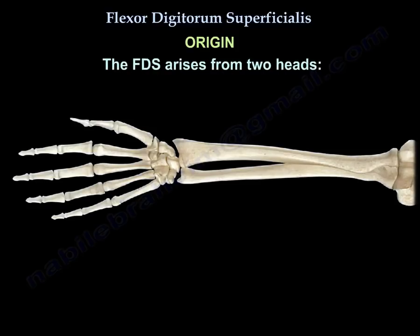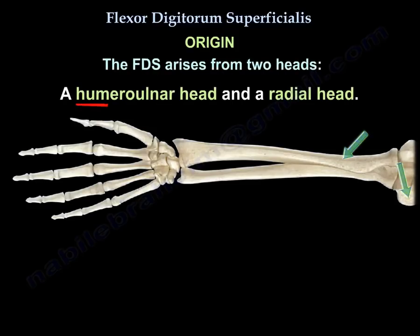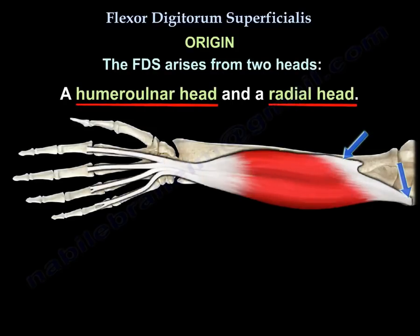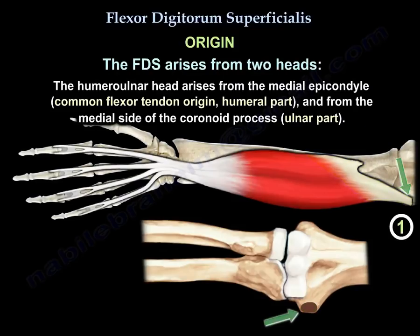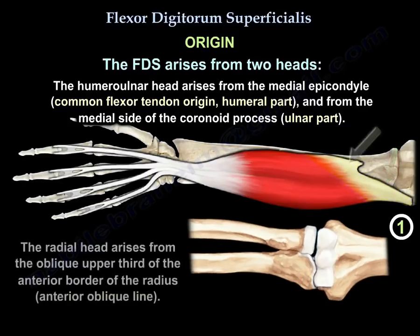Origin: two heads — a humeral-ulnar head and a radial head. The humeral-ulnar head arises from the medial epicondyle at the common flexor origin, and from the medial side of the coronoid process — that is the ulnar part. The radial head arises from the oblique upper third of the anterior border of the radius, called the anterior oblique line.